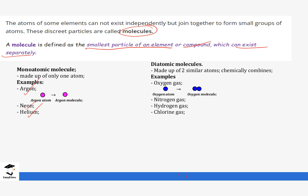We also have diatomic molecules, which are made of similar atoms. For example, if you take two oxygen atoms and put them together they form oxygen molecules. Two nitrogen atoms put together form nitrogen gas. Two hydrogen atoms put together form hydrogen molecules. These are examples of molecules made up of two atoms of the same type, and we call them diatomic molecules.